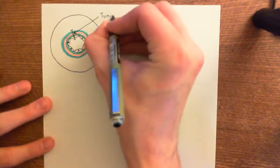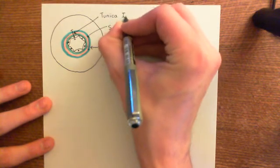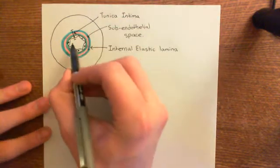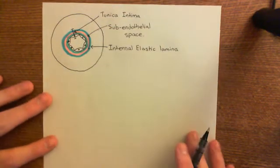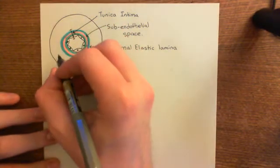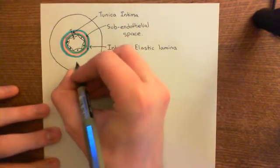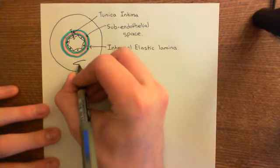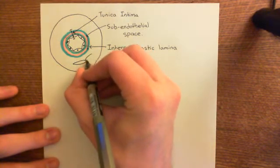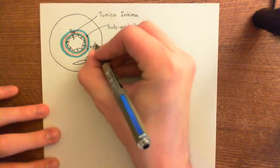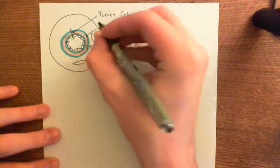Surrounding the internal elastic lamina, you have a layer of smooth muscle cells. This layer is full of smooth muscle cells arranged in rings, going around the blood vessel like so.